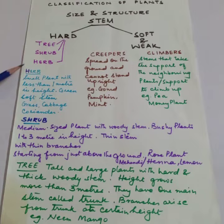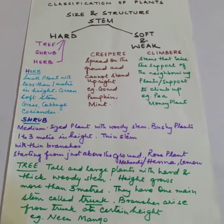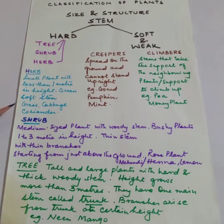Herbs are small plants with less than one meter in height, with a green soft stem. For example: grass, cabbage, and coriander.